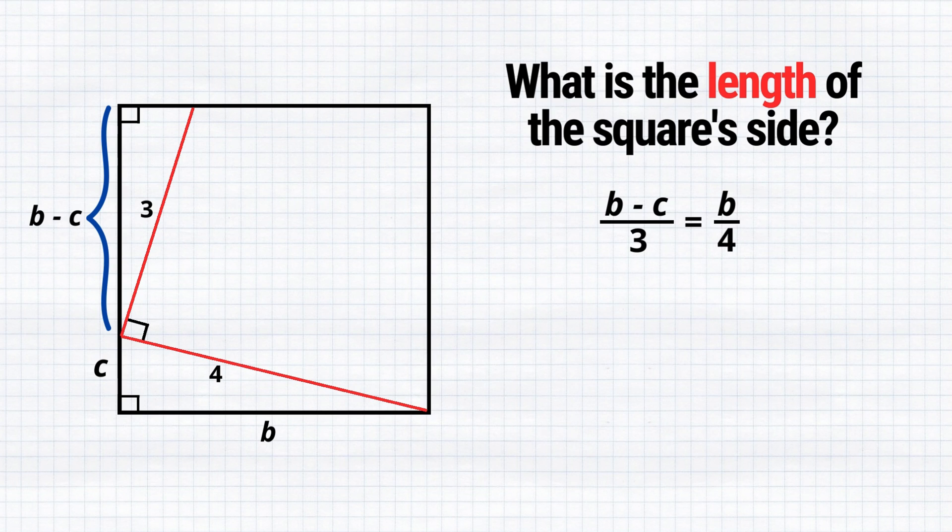I propose to solve this equation for C. We first cross multiply, then distribute, and finally simplify. We get that 4B equals 4C, which can be expressed as C equals B over 4. We will then substitute it in our picture.